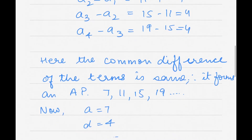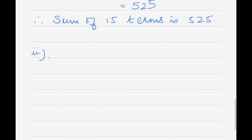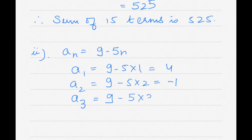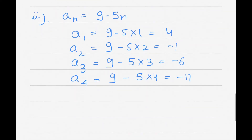Second case: an = 9 − 5n. Substituting values — a1 = 9 − 5×1 = 4; a2 = 9 − 5×2 = −1; a3 = 9 − 5×3 = −6; a4 = 9 − 5×4 = −11. Now we check the common difference.